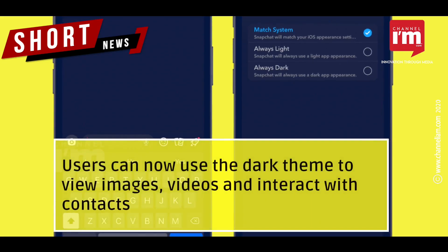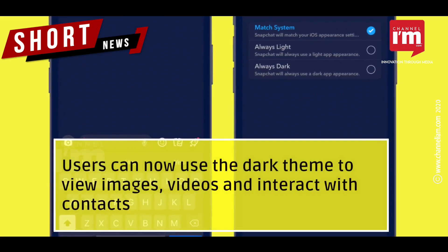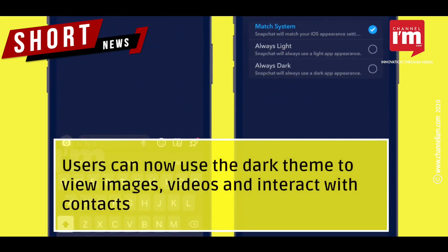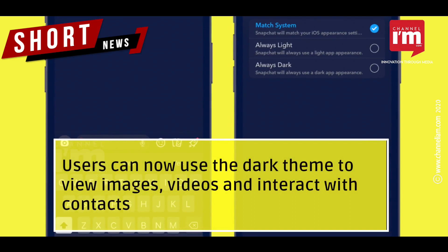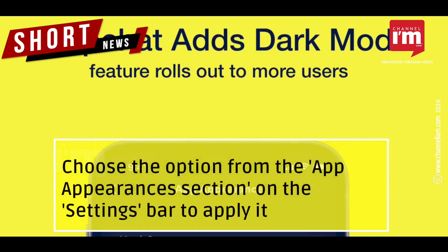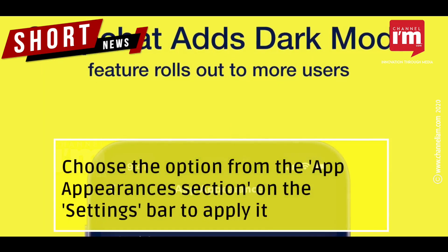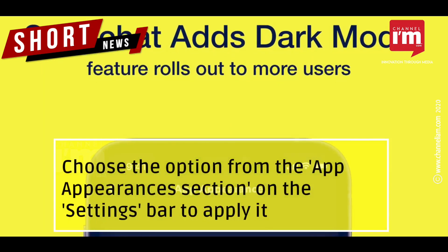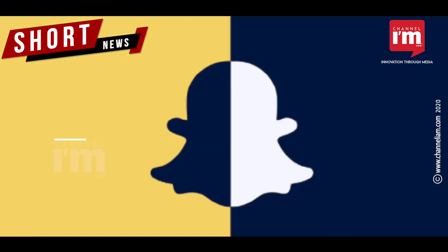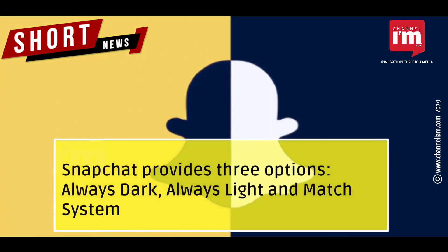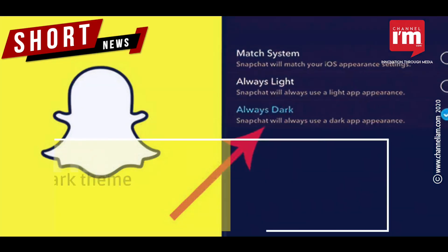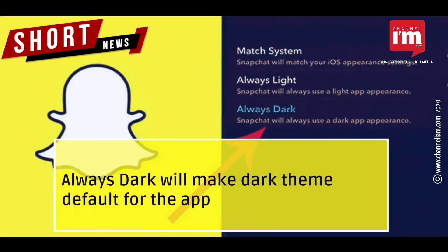Users can now use the dark theme to view images, videos and interact with contacts. Choose the option from the App Appearances section on the Settings bar to apply it. Snapchat provides three options: Always Dark, Always Light, and Match System. Always Dark will make the dark theme default for the app.